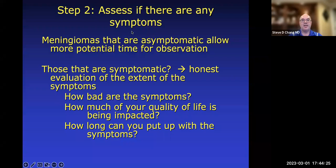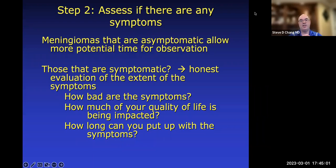Step two is: what symptoms, if any, are you having? If you are not having any symptoms — your meningioma is asymptomatic — that may allow a lot more time for observation. We have the option of observation, surgery, or radiation. Observation involves obtaining periodic MRI scans to make sure the tumor isn't changing in size. If you're not having any symptoms, it really opens the door for a potentially longer window of observation, though the tumor has the potential to grow and cause symptoms during that time.